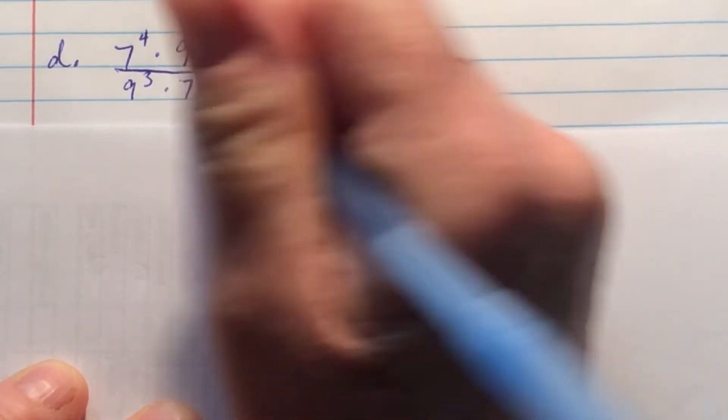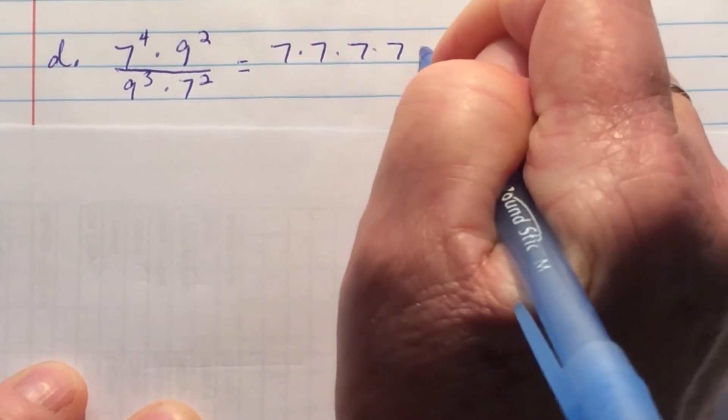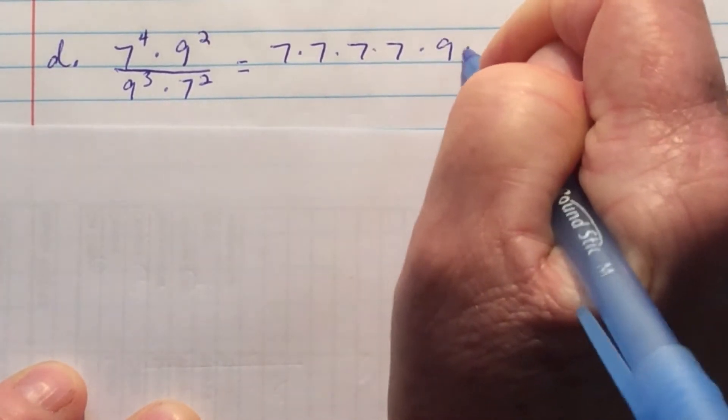First, I'm going to factor this out. So 7 to the fourth power times 9 to the second power.